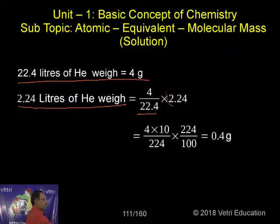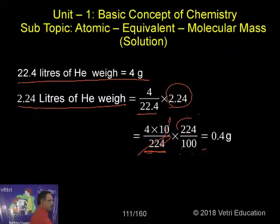What way? 4 into - this I am converting into whole number 224, by putting below 100 (2 decimals). The same way, in this case 22.4 I am written as 224, by putting 1 decimal (10). I can easily cross 224, then 10 and 100 remain. So 4 by 10, nothing but 0.4 gram is the correct answer.